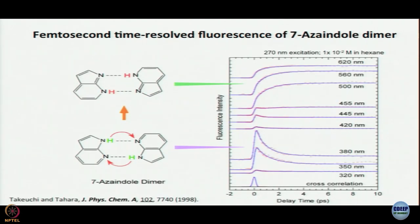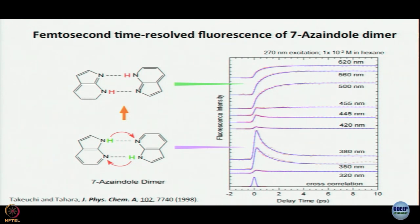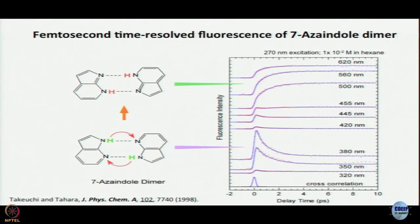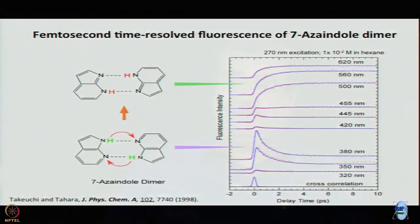This tautomer emission becomes prominent at higher concentrations. This is the starting point of our time-resolved spectroscopic discussion, and this data comes from the 1998 JACS paper by Takeuchi and Tahara. What they started with was a very well-established starting point. I show you another paper published by the Zewail group before this, in 1995. So there was some background. What they thought was: excited state double proton transfer takes place.